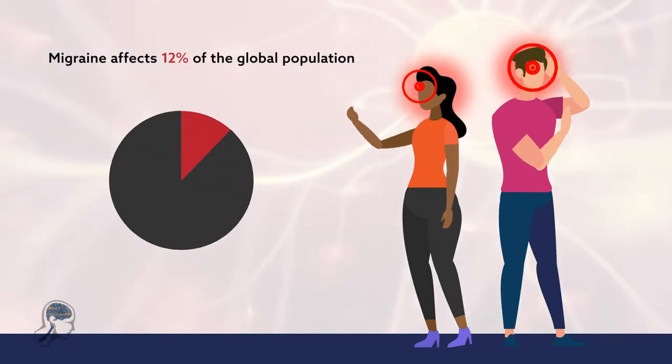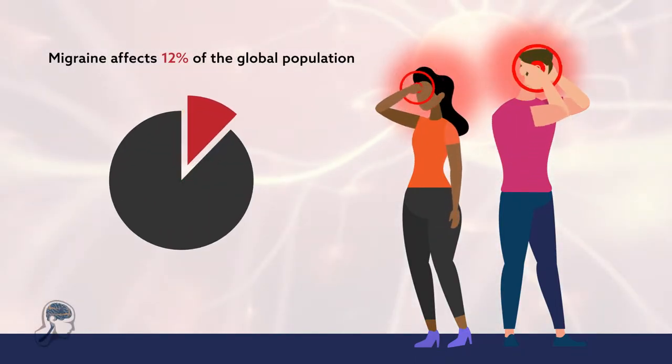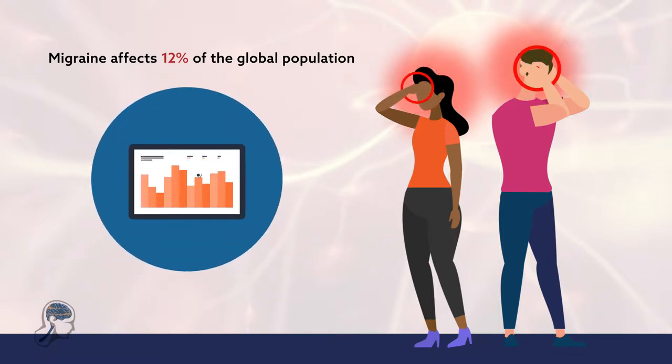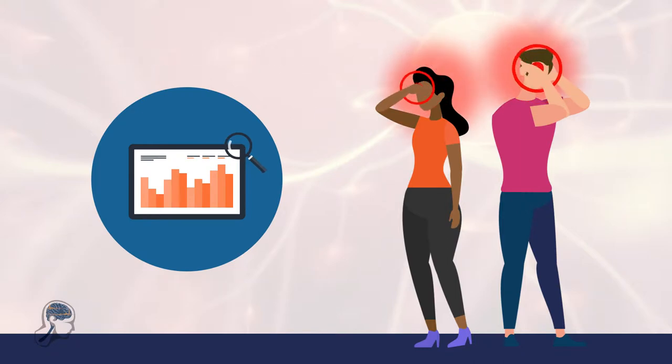Migraine affects 12% of the global population, including children. Although the severity of symptoms varies among the nearly 1 billion people who suffer from the disorder, migraine ranks as the most disabling disease in people under 50.